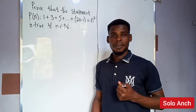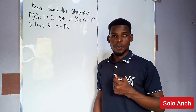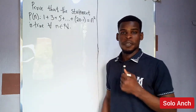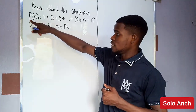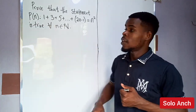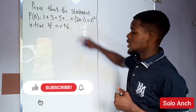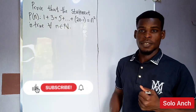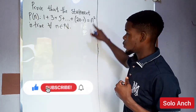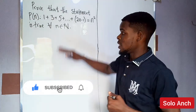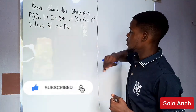Hello, welcome to my channel. My name is Solo Ranch, and in this video we want to prove by the principle of mathematical induction that statement P, which tells us that the sum of the first n odd natural numbers is the same as n squared.